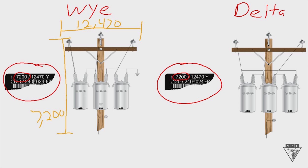In this example, if you tried to hook up these transformers phase-to-phase and feed them with 12,470 volts, you'd break down the insulation in the primary coil, ruin the transformers, and burn them up. That's why we hook it up phase-to-ground to get that 7,200 volts that the transformers are rated for.